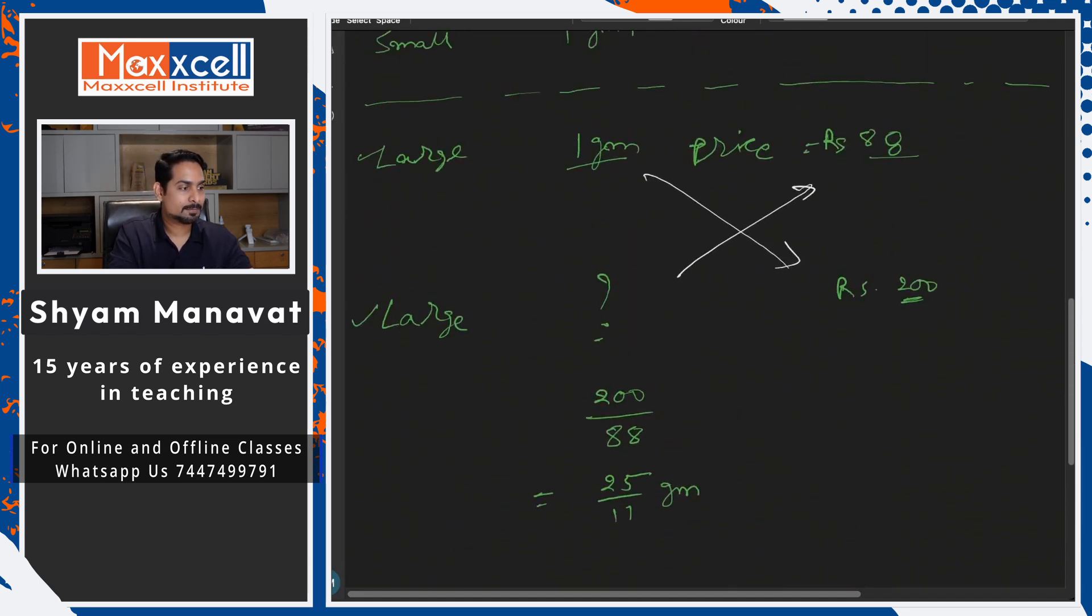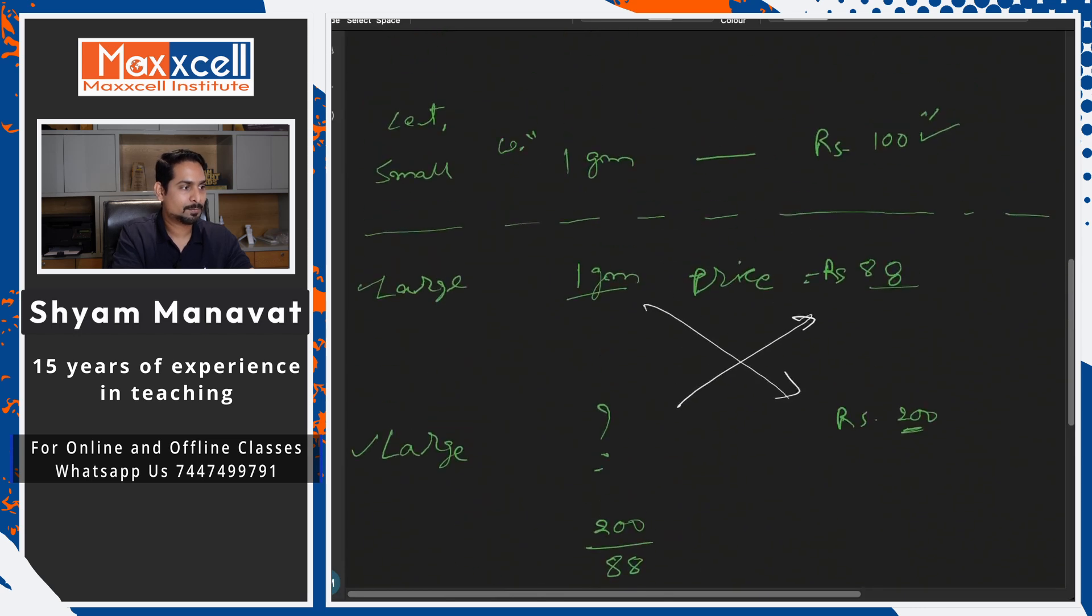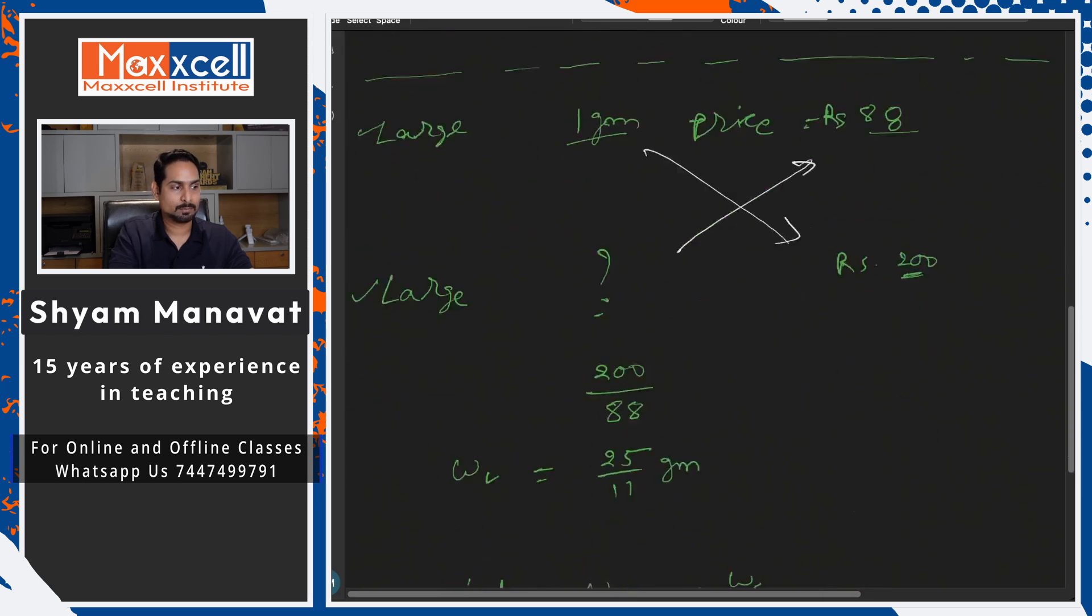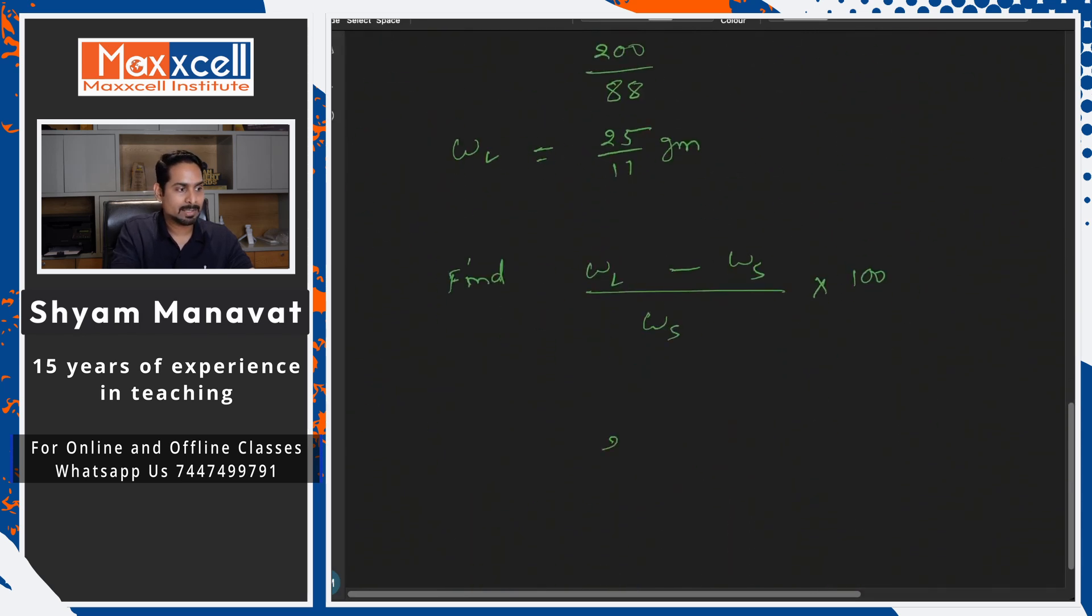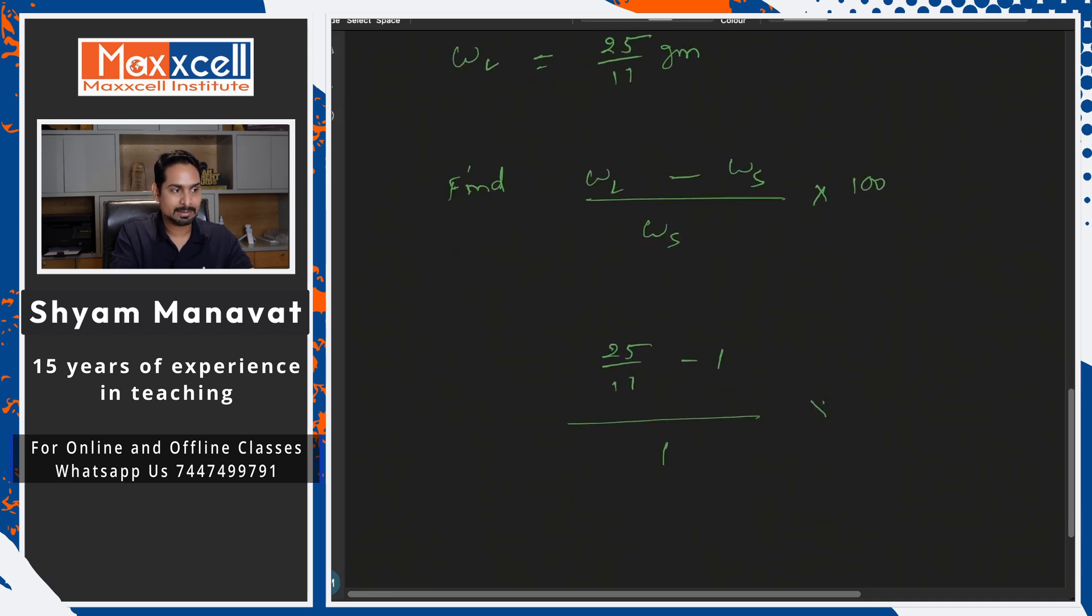So weight of the large box and here this is the weight of the smaller box. So 25 by 11 and 1. What is the difference? 25 by 11 minus 1. What is the difference? The weight of the smaller one is 1 only. There is no need to write 1 in the denominator, but just to explain you. See the difference?